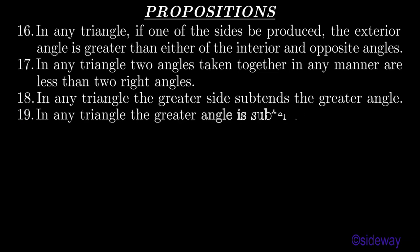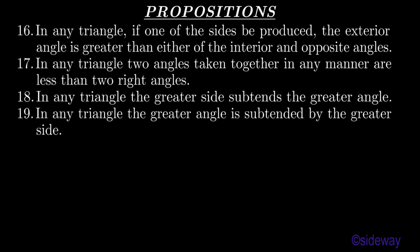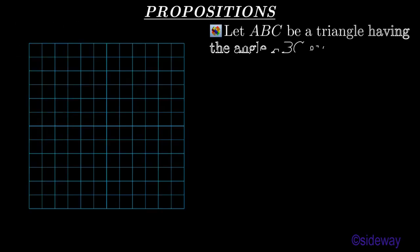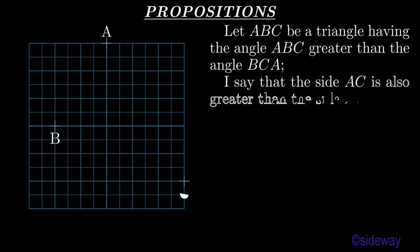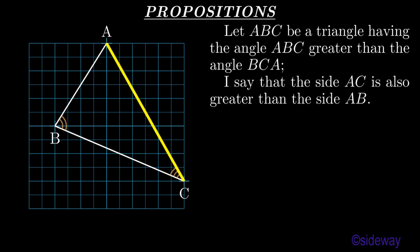Proposition 19. In any triangle, the greater angle is subtended by the greater side. Let ABC be a triangle having the angle ABC greater than the angle BCA. I say that the side AC is also greater than the side AB.